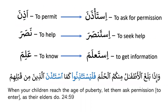More examples: adhina means to permit, and ista'dhana means to ask for permission. Nasara means to help, and istansara means to seek help — and notice after 'ta' the next letter is sakin. 'Alima means to know, and ista'lama means to get information. The Quranic verse: وإذا بلغ الأطفال منكم الحلم فليستأذنوا — after lam al-amr the verb becomes majzum, so the nun is dropped.